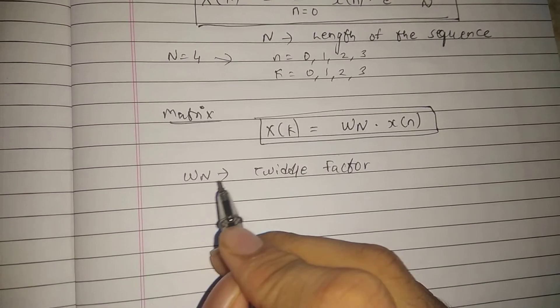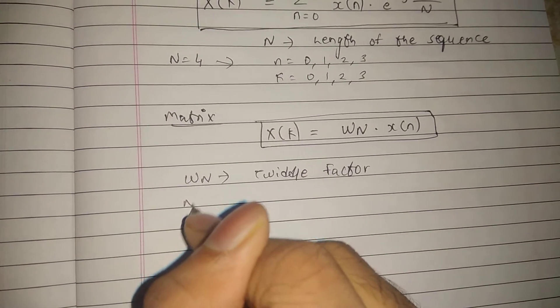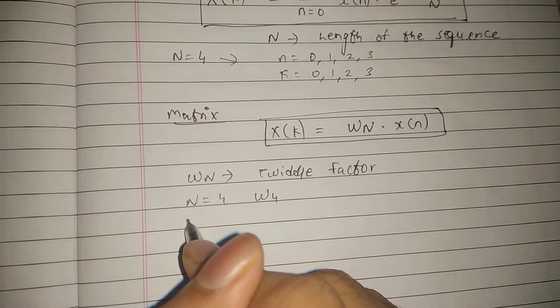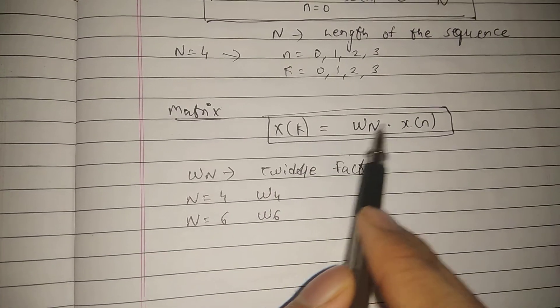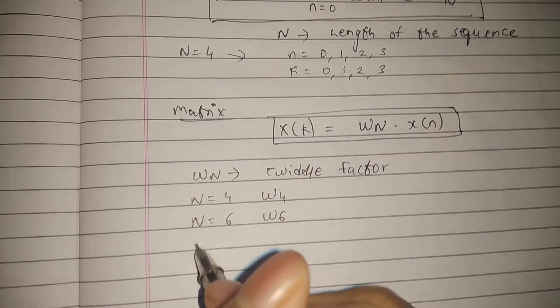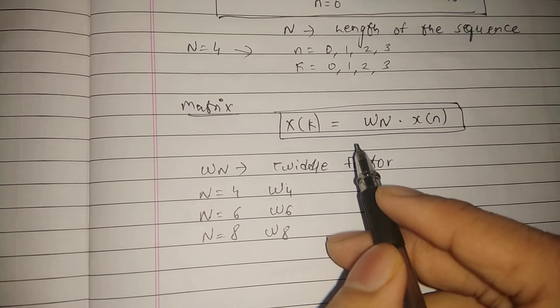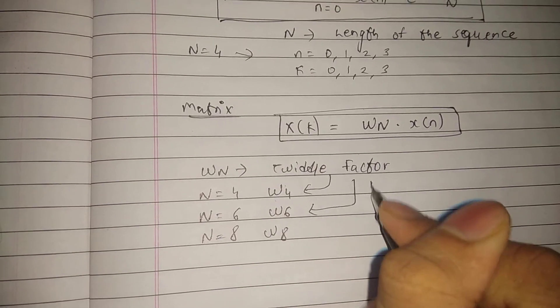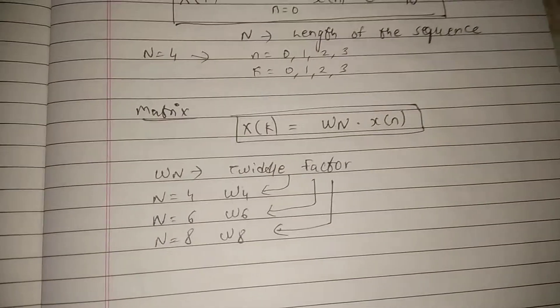We have three types of twiddle factor. When N is 4, you have ω4. When N is 6, you have ω6. When N is 8, you have ω8. These are your twiddle factors.